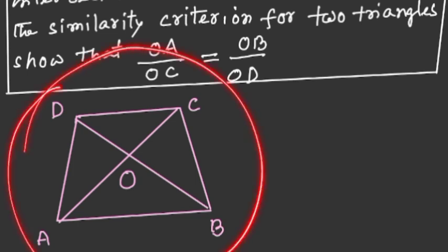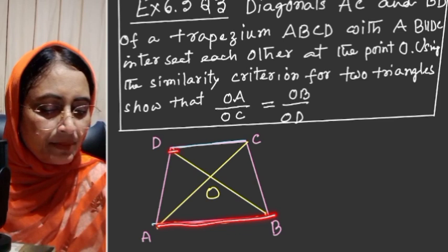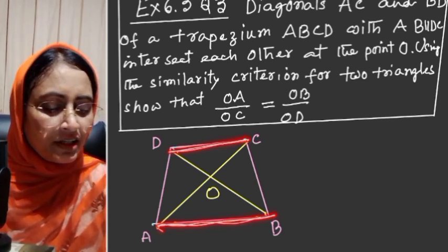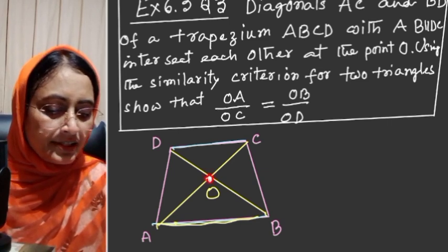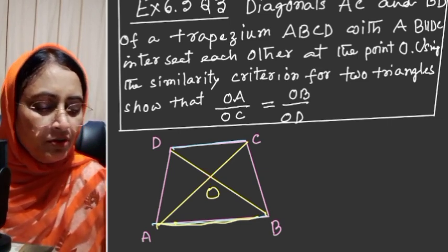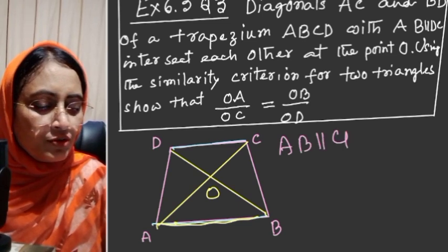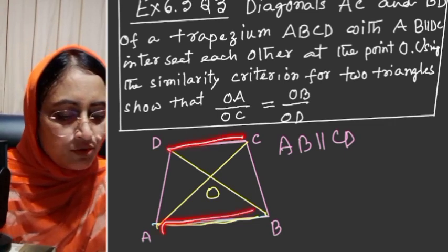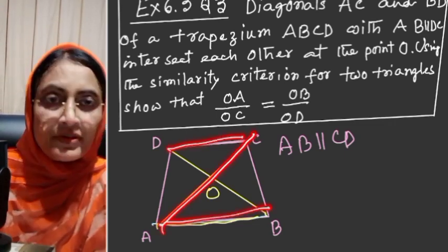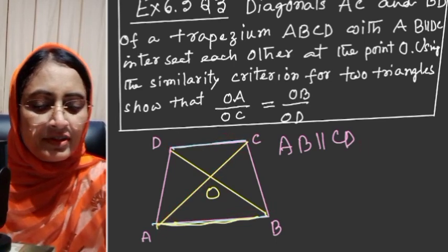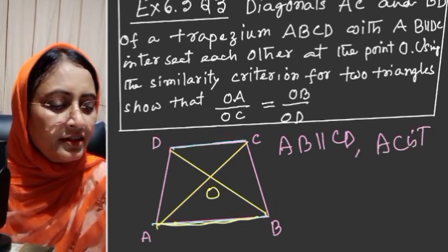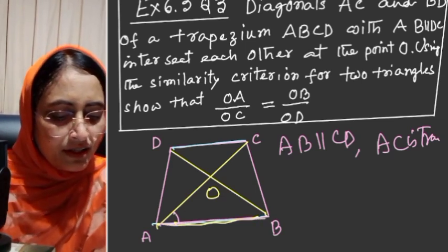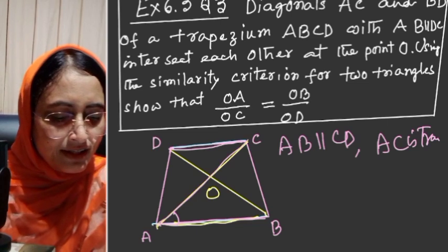In this trapezium we know these two sides are parallel by definition. These two sides AB and CD are parallel, and AC is a transversal. So AC is transversal.